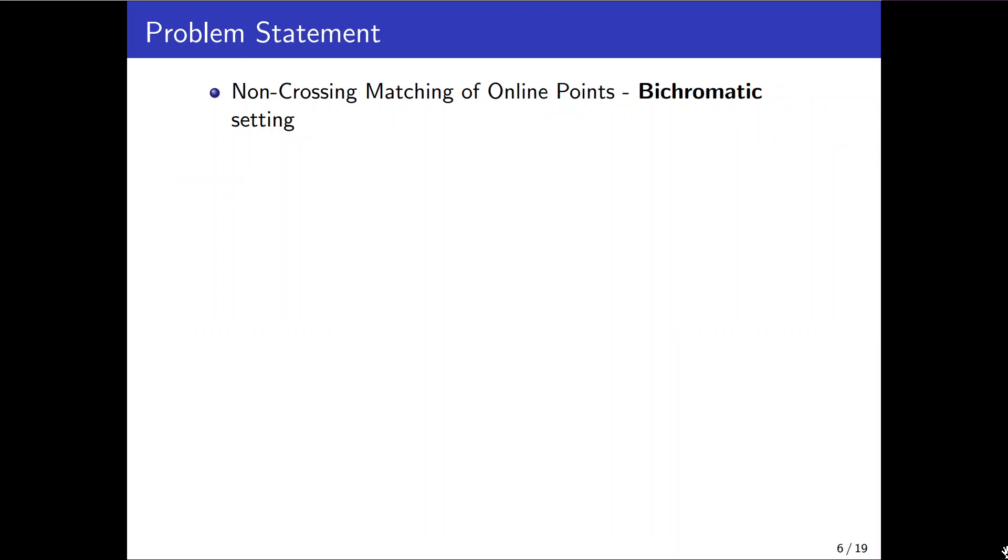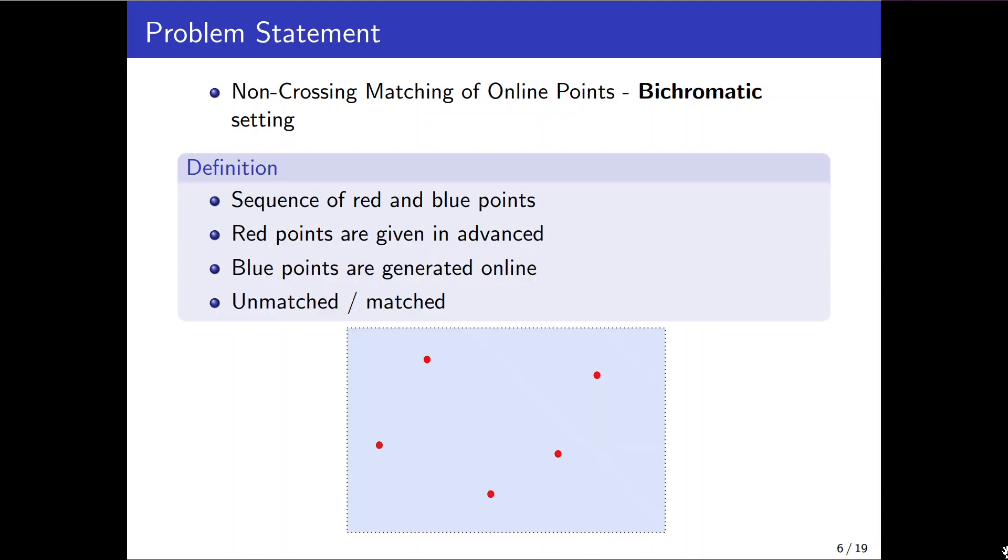The bichromatic case is somehow similar to the monochromatic one. However here half of the input are red which are given in advance and the rest are blue and they are provided in an online manner. Again once a blue point appears online algorithm can leave it unmatched or matched within the red points. The goal in both these cases is to find the maximum matching.